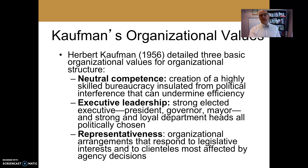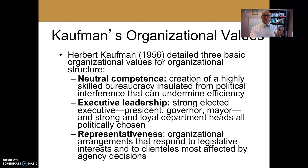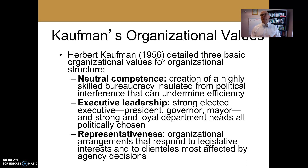Kaufman talks about those three values — neutral competence, executive leadership, and representativeness — as crucial parts of organizations. Some of them contradict each other. Neutral competence might clash against executive leadership or representativeness when the desires of the highly skilled technical bureaucracy conflict with public demands, because those public demands might not be reasonable, efficient, or rational.